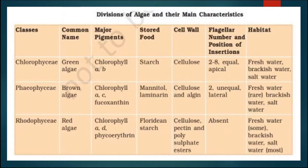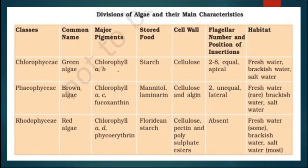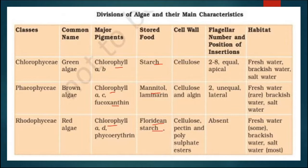In this slide, we can see the divisions of algae. Algae are divided into three main classes: Chlorophyceae (green algae), Phaeophyceae (brown algae), and Rhodophyceae (red algae). They have different pigments — Chlorophyceae has chlorophyll A and B; Phaeophyceae has chlorophyll A, C, and fucoxanthin; Rhodophyceae has chlorophyll A, D, and phycoerythrin. Their stored food also differs: Chlorophyceae stores starch; Phaeophyceae stores mannitol and laminarin; Rhodophyceae stores floridean starch.